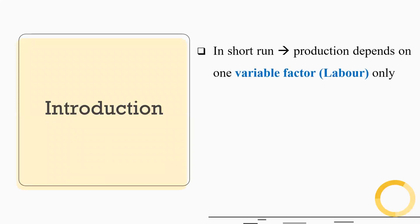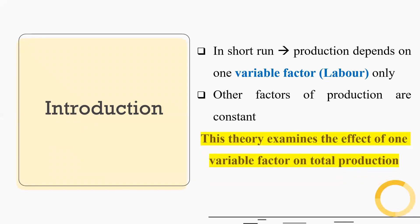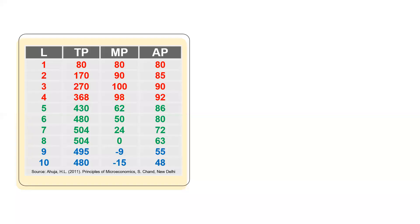In the short run, production depends on one variable factor, that is labor, so other factors of production are constant. This theory examines the effect of one variable factor on total production — that is the idea of the law of variable proportions. Let's understand it with the help of an example.